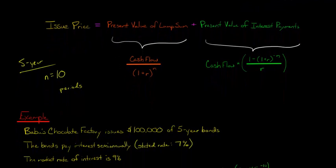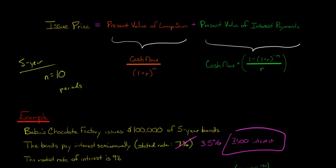Let's say that we've got Babu's Chocolate Factory issuing $100,000 of five-year bonds, and the bonds are going to pay interest every six months semi-annually. The stated rate, if we were to think about it on an annual basis, would be 7%, but we're going to have to divide that by two, so we really say that it's 3.5%. Instead of paying $7,000 of interest every year, it's going to pay $3,500 of interest every six months. So for the entire year, it's still $7,000.